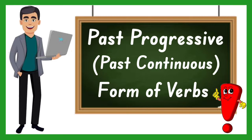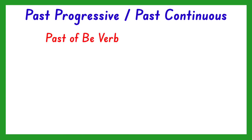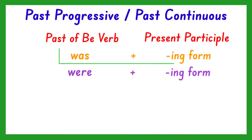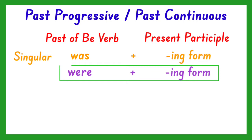What do we mean by this form of verbs? Past progressive or past continuous is formed with the past tense of the verb to be — was or were — plus the ing form of the verb, or its present participle. Was plus the present participle is used if the subject in the sentence is singular or only one, while were plus the past participle form of the verb is used if the subject in the sentence is plural or more than one.